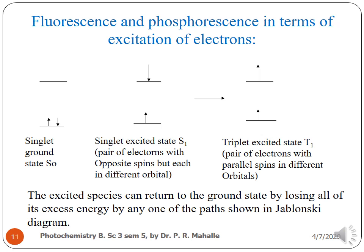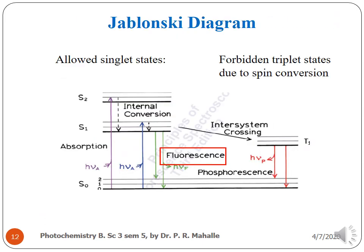This slide shows fluorescence and phosphorescence in terms of excitation of electrons. It is represented in terms of the singlet ground state, singlet excited state, and triplet excited state. The excited species can return to the ground state by losing all of its excess energy by any one of the paths shown in the Jablonski diagram. This is the Jablonski diagram showing the allowed singlet states as well as the forbidden triplet states.